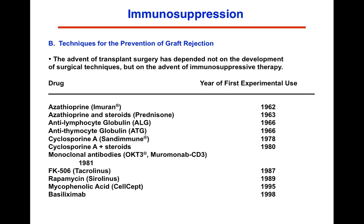This became an issue in World War II when you had burn victims and needed to treat their burns. One technique developed was using skin grafts from the individual — taking grafts from a person's leg and putting them on their arm or chest, where the skin would be able to grow back and wouldn't be rejected. But what about other organs? The advent of transplantation therapy has really depended on drug therapy — it's been totally dependent.